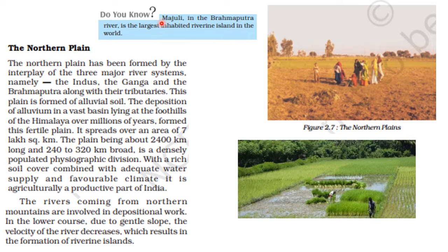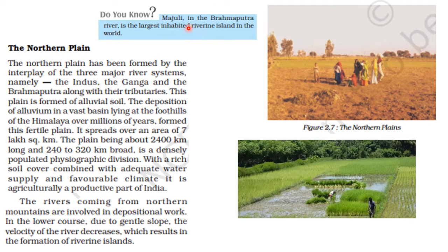In the Brahmaputra basin, Majuli is the largest inhabited riverine island in the world. Generally, riverine islands are not safe — due to floods they can be washed away or destroyed. But Majuli in the Brahmaputra basin is not only inhabited, meaning people live there, but it is also the world's largest riverine island.